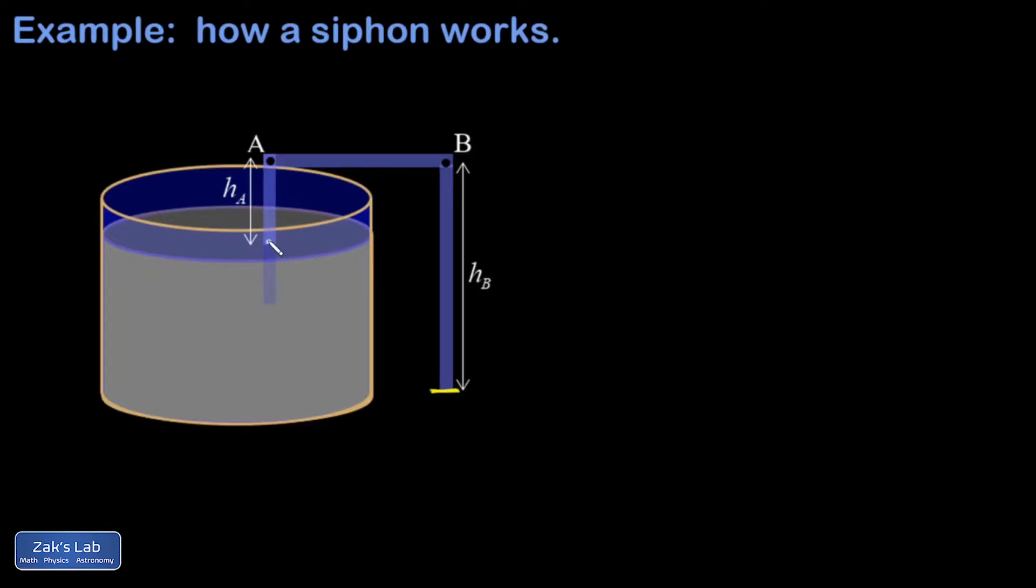So I'm going to examine two interesting points: one right there below point A, and that's at the exact same height as the surface of the water but it's inside the tube. Because the surface of the water has a pressure of one atmosphere simply because it's exposed to the atmosphere, and this point inside the tube is at the same height in a connected fluid, it's also going to have a pressure of one atmosphere.